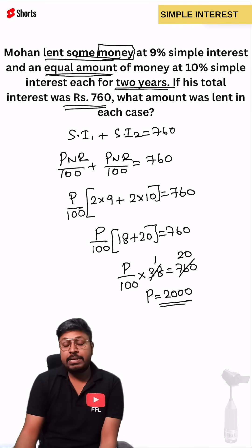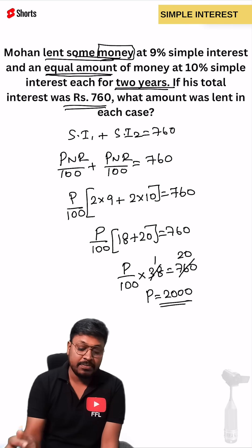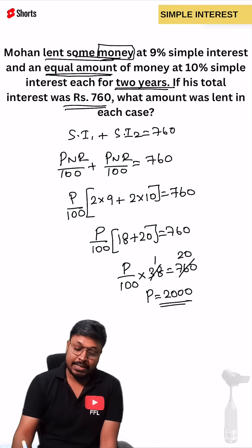Finally, we can say that the person Mohan lent 2000 as the initial amount. In both cases it is same because they have given the word equal amount. So in each case, the amount that was lent is 2000.